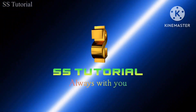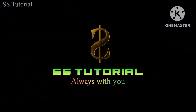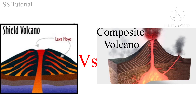Hello viewers, welcome to SS Tutorial. Today in this video, I will discuss about some differences between shield volcano and composite volcano. Shield volcano and composite volcano are two main types of volcano found on the earth, but they have some clear differences. Let's know them one by one.